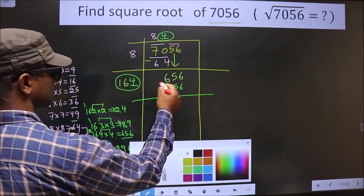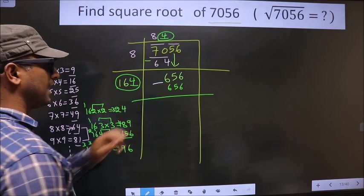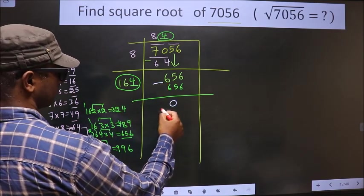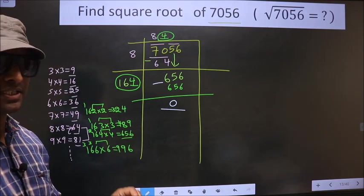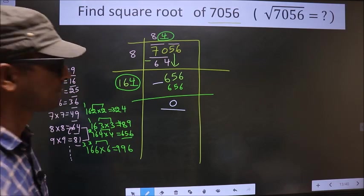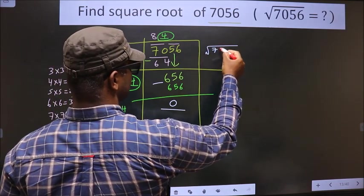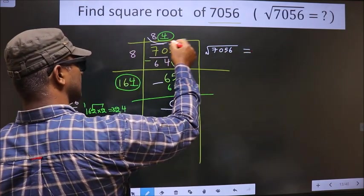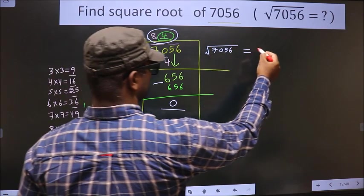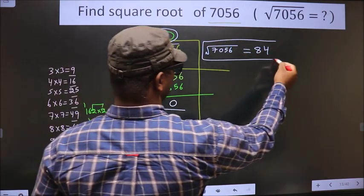Now you subtract these two numbers. When you subtract you get 0. We got 0, that means the given number is a perfect square. And the square root of 7056 is this number, 84. So this is our answer.